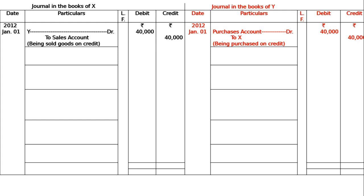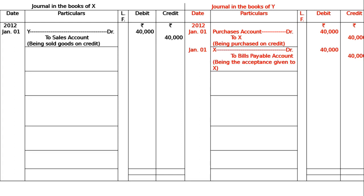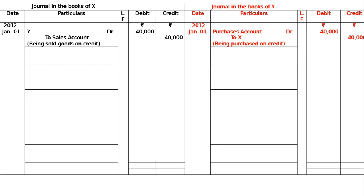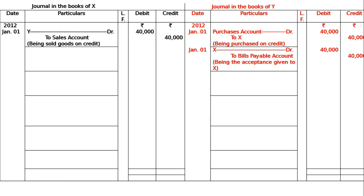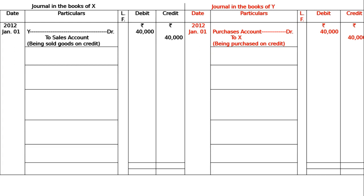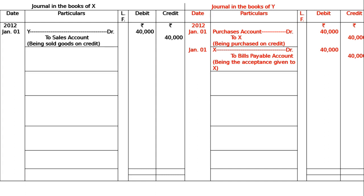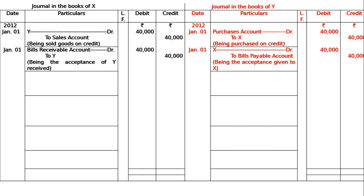On the same day, X draws a bill on Y at three months for rupees 40,000. Y draws an acceptance, so in the books of Y it is bills payable account debited to X, rupees 40,000, being the acceptance given to X. In the books of X, it is bills receivable account debited to Y, being the acceptance of Y received, rupees 40,000.